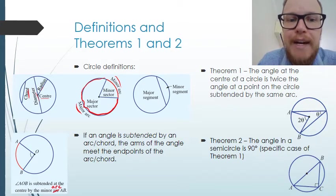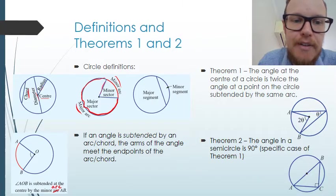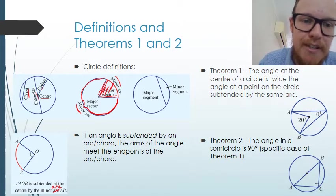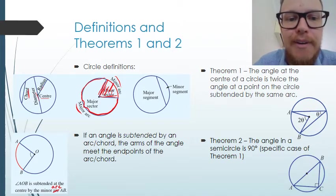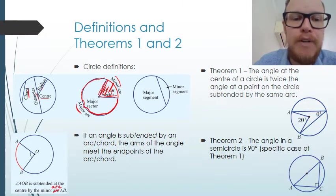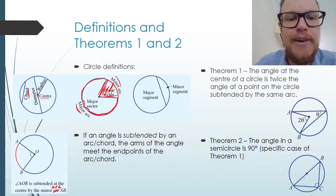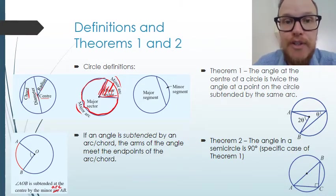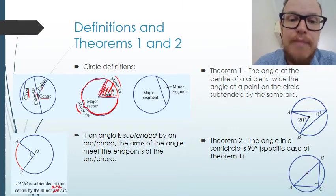If we draw a radius out to each side of the arc — to one side and the other side — then we divide the circle into a sector. The sector is the region inside that arc joined by those two radii. A minor sector is less than half the circle and a major sector is greater than half the circle.